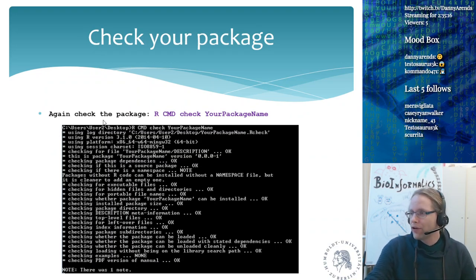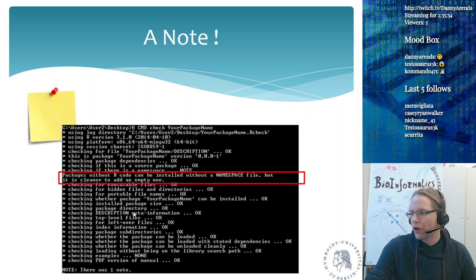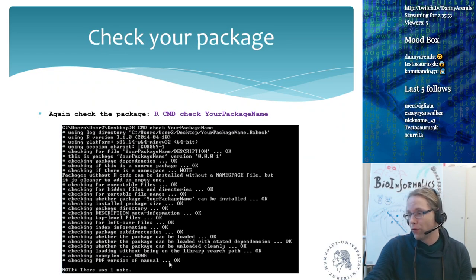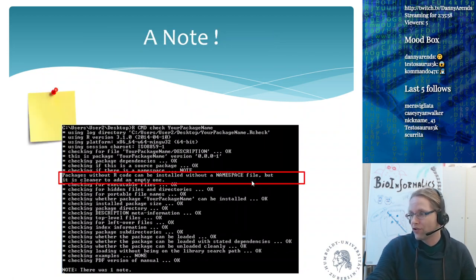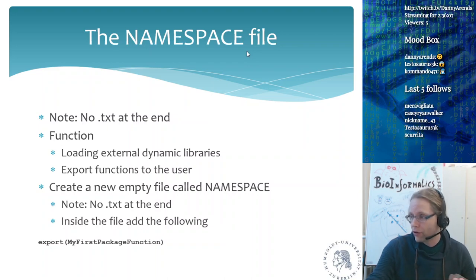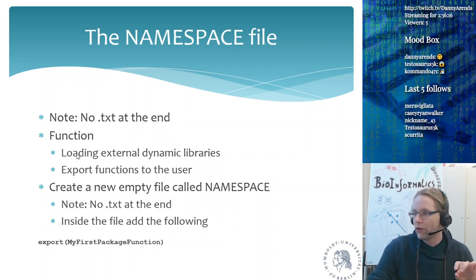Once you've created this DESCRIPTION file, run R CMD check your_package_name again. It will find the description file and go through all the checks. It will give one note saying 'packages without R code can be installed without a namespace file but it is cleaner to add an empty one.' So creating an R package is relatively easy — just a folder with the package name and this description file, and it's already a valid R package, aside from that one note about the namespace file.